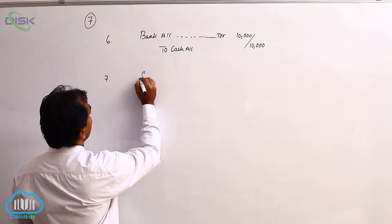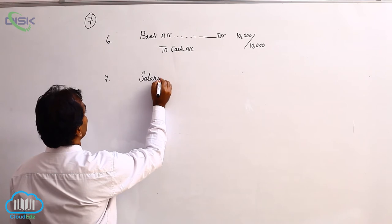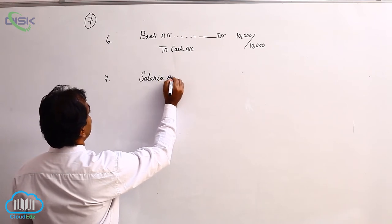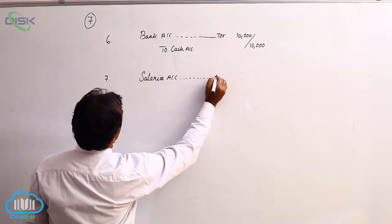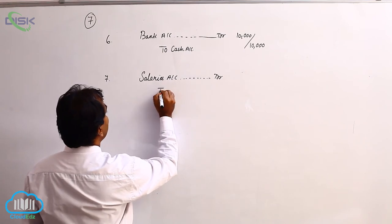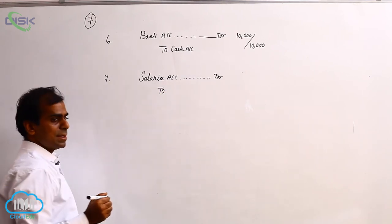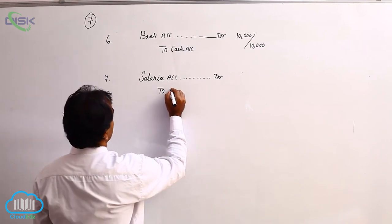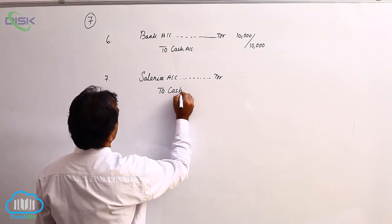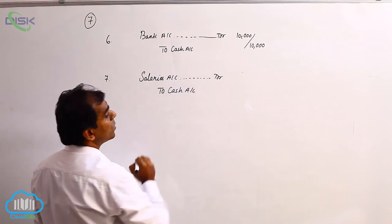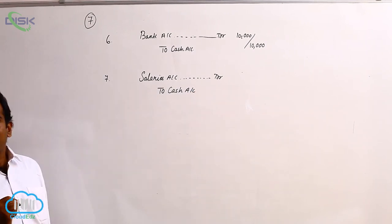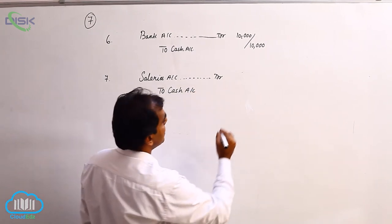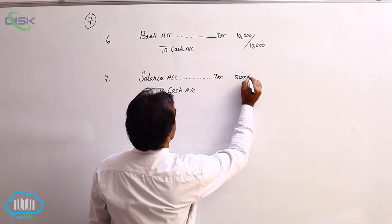debit all expenses. As a result, we debit salaries - salaries account debit. Paid means cash. Cash is a real account, it is going out, so we credit cash. Salaries account debit to cash account would be your journal entry. The amount is 5,000.